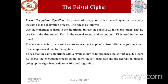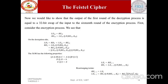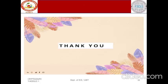Feistel decryption is essentially the same process as encryption, using the ciphertext as input but applying the sub-keys in reverse order — K_n in the first round, K_{n-1} in the second, and so on until K_1 is used in the last round. This is a nice feature because it means we need not implement two different algorithms for encryption and decryption. The same algorithm with reversed key order produces the correct result, as seen through the corresponding equations. Thank you.